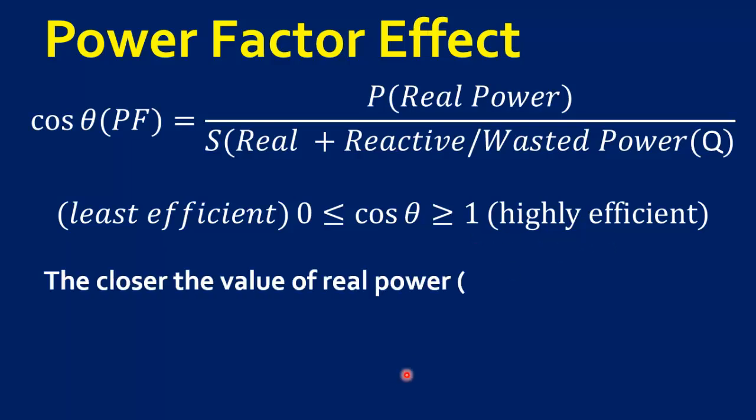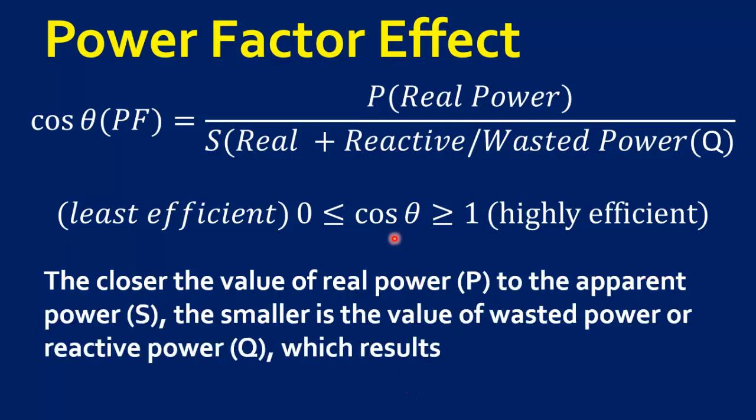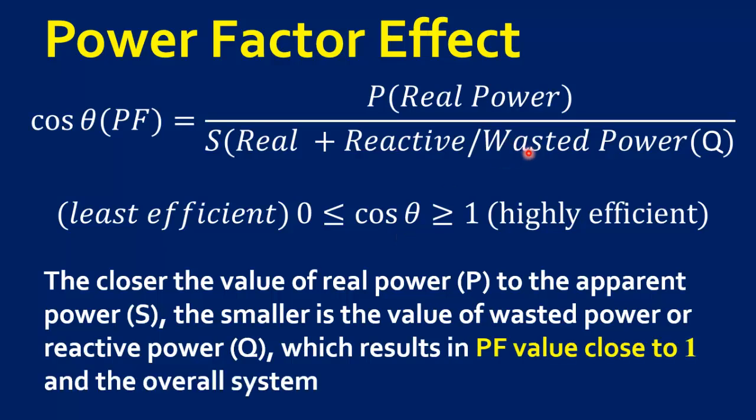The closer the value of real power P to the apparent power S, the smaller is the value of wasted power or reactive power Q, which results in power factor close to 1, and hence the overall system is more efficient.